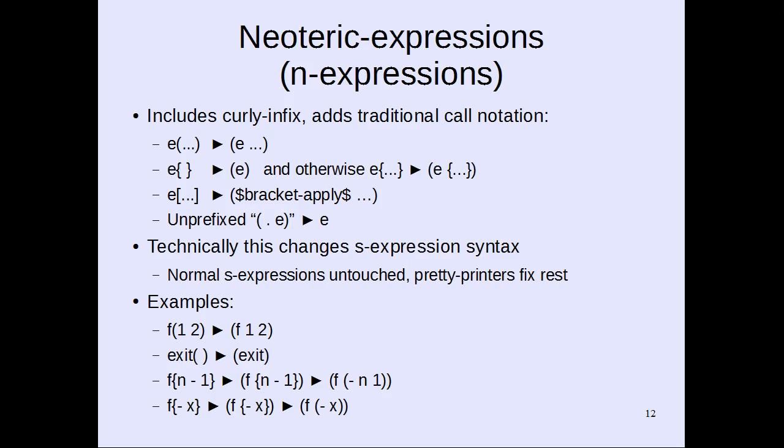Now let's talk about Neoteric Expressions, aka N-expressions. These include curly-infix and add traditional call notation. If you simply write a datum followed immediately by an open paren, that's just another way of writing that datum applied to its arguments. For example, f(1 2) is another way of writing (f 1 2). exit() is another way of writing (exit). f{n-1} is another way of writing (f {n-1}).